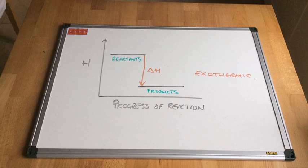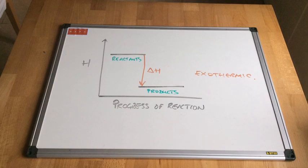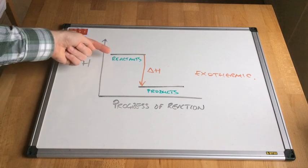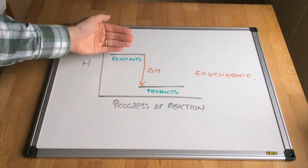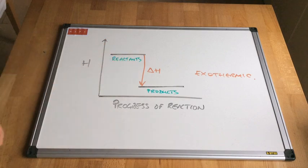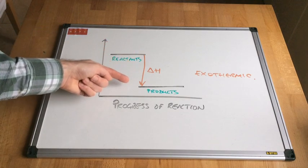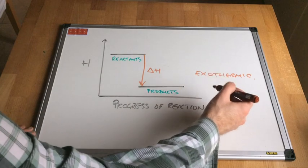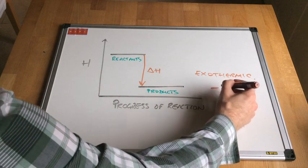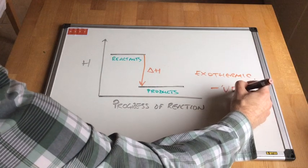This is what we call an exothermic reaction. The enthalpy has decreased — we started with a high enthalpy and went to a lower enthalpy — so the enthalpy change is negative because heat energy has been lost to the surroundings. Exothermic reactions have a negative Delta H.